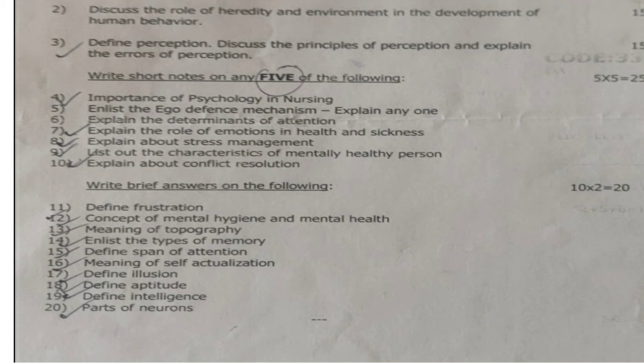Question 4: Importance of psychology in nursing. Question 5: Enlist the ego defense mechanisms and explain any one. Question 6: Explain the determinants of attention. Question 7: Explain the role of emotions in health and sickness. Question 8: Explain about stress management. Question 9: List out the characteristics of a mentally healthy person. Question 10: Explain about conflict resolution.